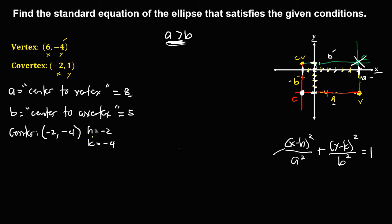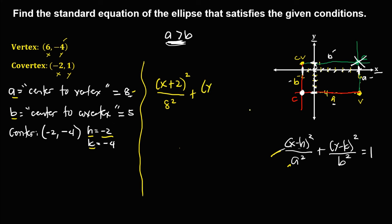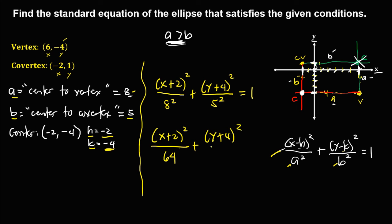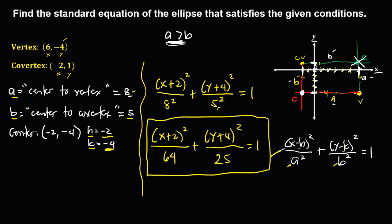Since we now have all the values — h, k, a, and b — we can solve the standard equation. Substituting: x minus h, since h is negative 2, becomes x plus 2; squared over a squared, where a is 8, gives 64. Plus y minus k, since k is negative 4, becomes y plus 4; squared over b squared, where b is 5, gives 25. Equals 1. Simplifying: (x + 2)² / 64 + (y + 4)² / 25 = 1. This is the standard equation of the ellipse.